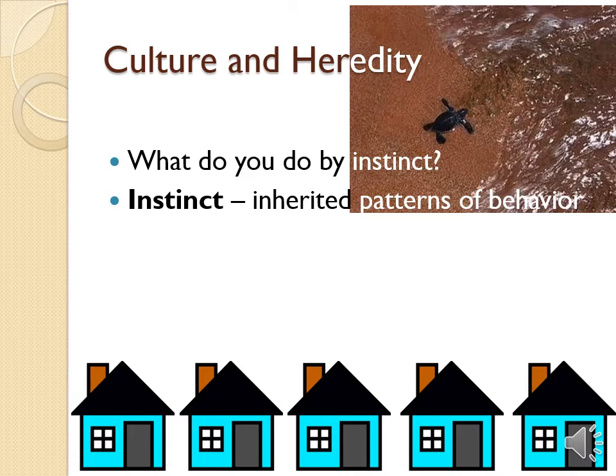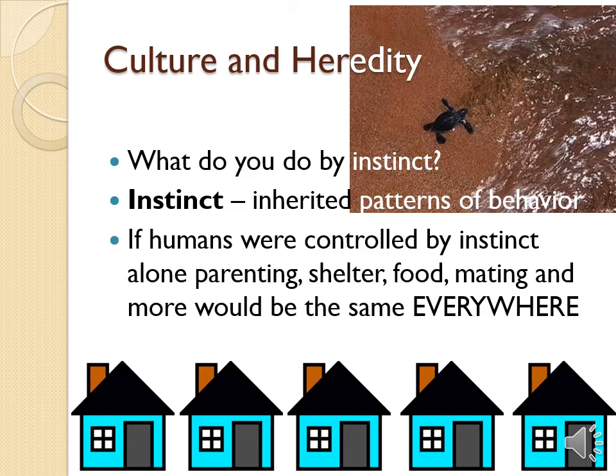Instincts are inherited patterns of behavior. We're not talking about reflexes like closing your eye when something gets thrown at your face. We're talking about: do you find your mate on instinct? Do you parent on instinct? Do you instinctually find food? The answer is not really, because if all of that were true, parenting, shelter, food, mating — everything everywhere would be the exact same. In the United States, we expect teenagers to date, to have different romantic relationship experiences, and then usually in their 20s settle down and get married. In other cultures, things like arranged marriages are the cultural norm, while they're not necessarily the norm here in the United States.